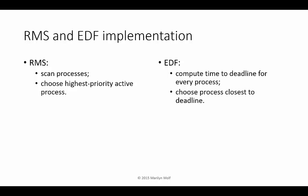Let's think about what RMS and EDF need to do in order to schedule. That time is linear in the number of processes. EDF takes each process, computes the time to the deadline, and then chooses the highest priority process based on that criterion. That takes more time than RMS.